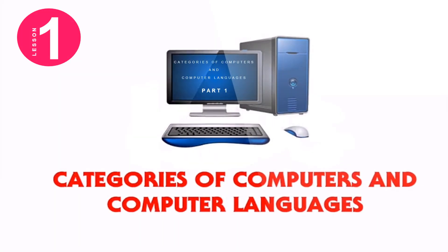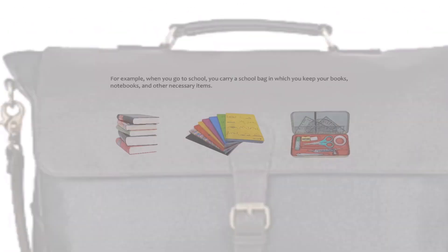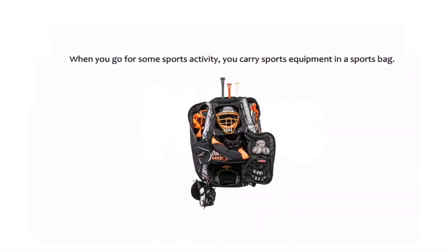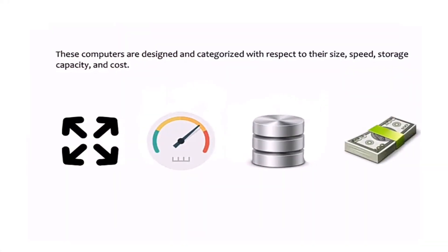Lesson number one: categories of computers and computer languages. You carry different types of bags to different places depending on your requirements. For example, when you go to school you carry a school bag with books and notebooks, but when you go for a sports activity you carry sports equipment in a sports bag. Likewise, you have options to select computers that suit your needs, designed and categorized with respect to their size, speed, storage capacity, and cost.